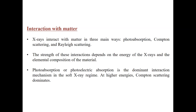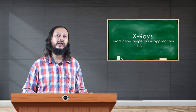How do X-rays interact with matter? This is an important property. X-rays interact with matter in three major ways: photo absorption, Compton scattering, and Rayleigh scattering. Which of these three interactions occurs depends on the energy of the incident X-rays and the composition of the material. Photo absorption, also called photoelectric absorption, is one of the most dominant interactions in the soft X-ray regime. For higher energies, it is Compton scattering which dominates.